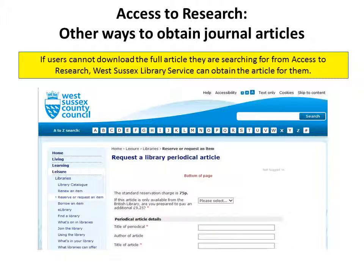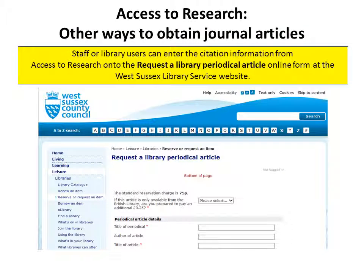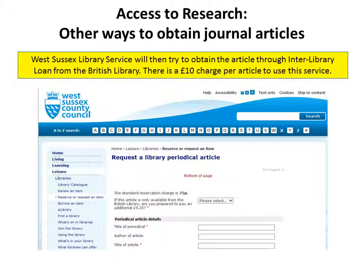Access to Research: other ways to obtain journal articles. If users cannot download the full article they are searching for from Access to Research, West Sussex Library Service can obtain the article for them. Staff or library users can enter the citation information onto the 'Request a Library Periodical Article' online form at the West Sussex Library Service website. West Sussex Library Service will then try to obtain the article through interlibrary loan from the British Library. There is a £10 charge per article to use this service.